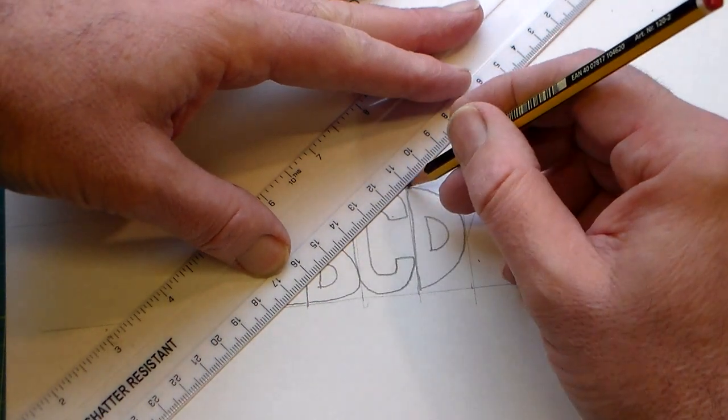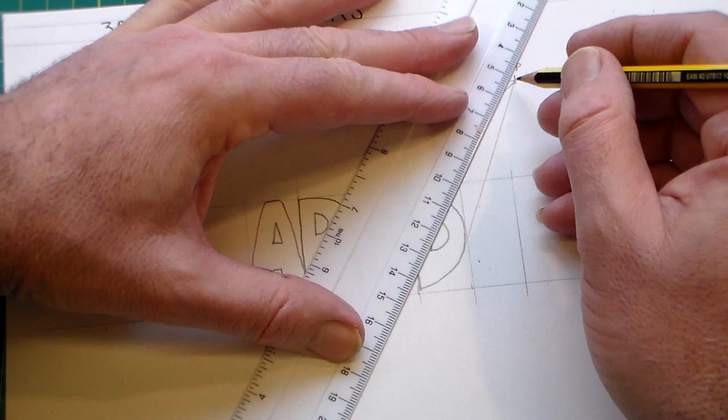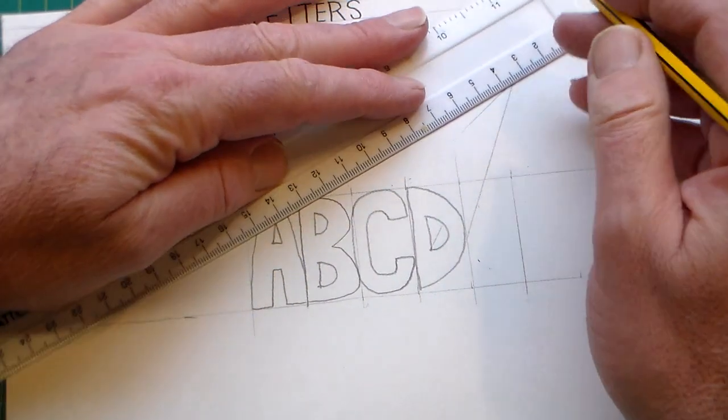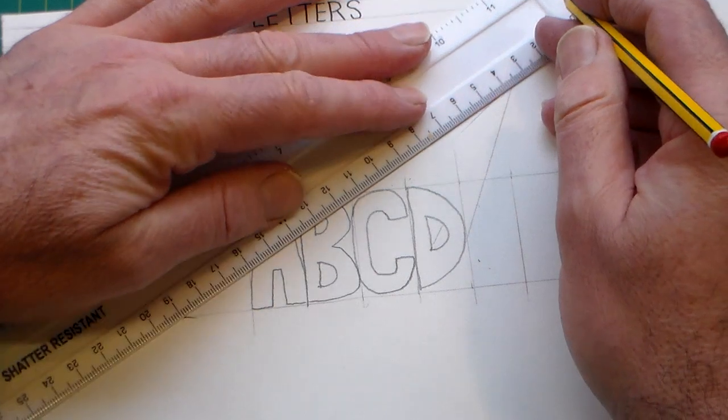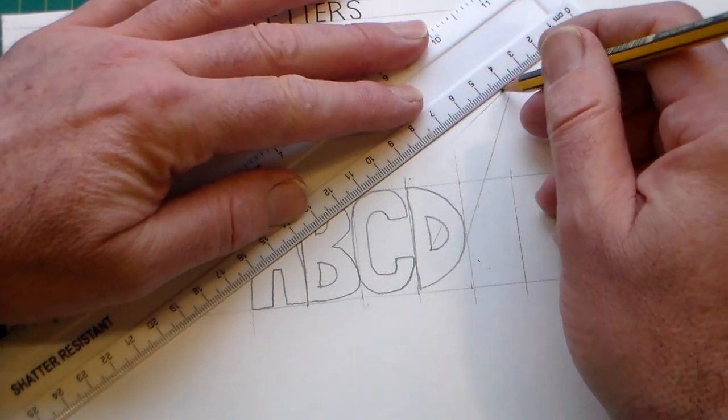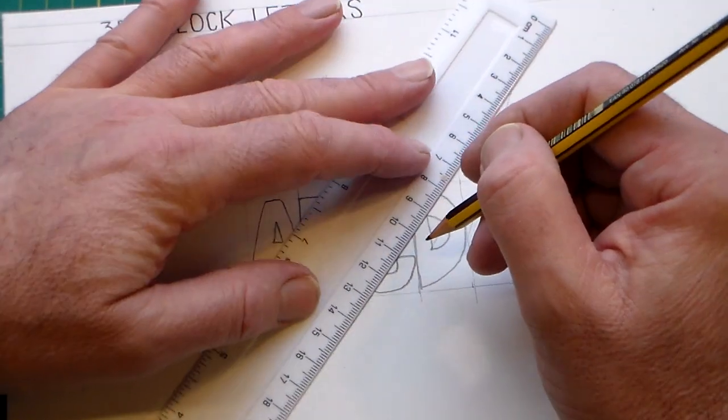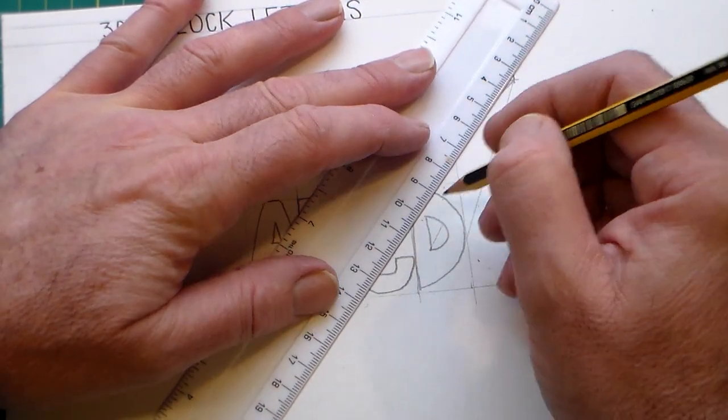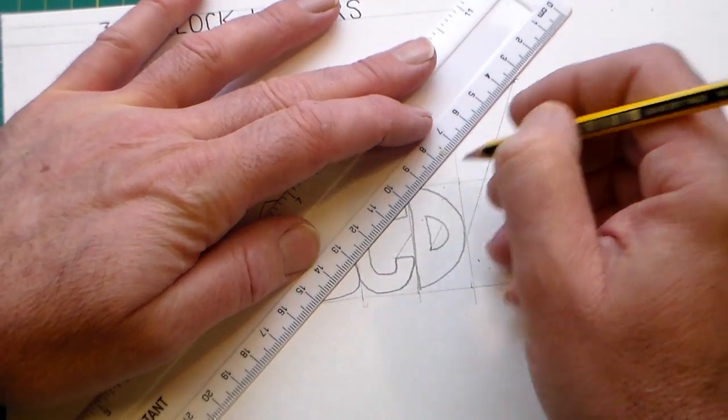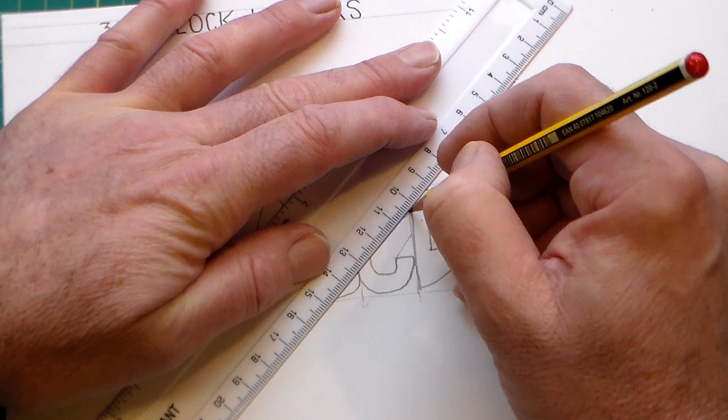And I'm doing this quite lightly in pencil. It's quite good to do it lightly in pencil because if you do make a mistake, we can change that. Now the top of each detail here would be added, but obviously that would disappear behind the next letter.